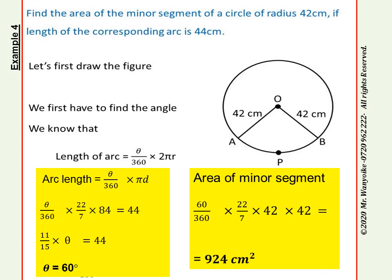Now with theta as 60 degrees, you can get the area of the minor segment OAPB, which is 60 over 360 times 22 over 7 times 42 times 42. That gives you 924 centimeters squared.